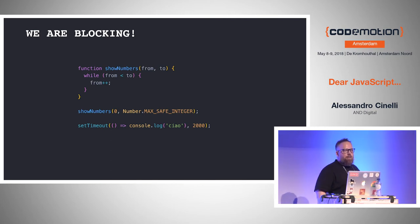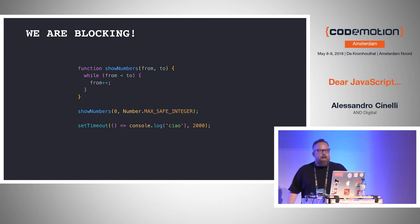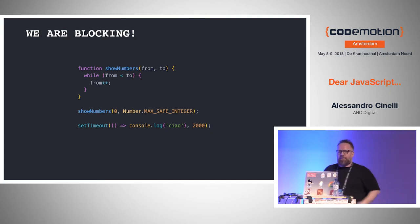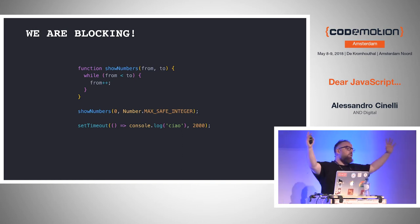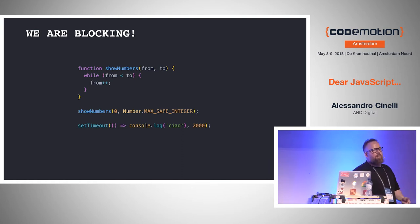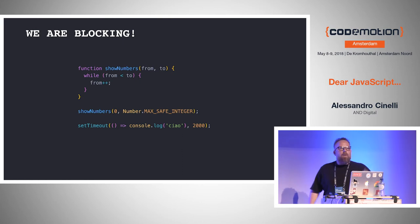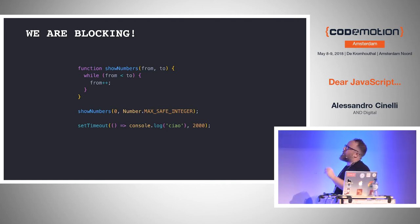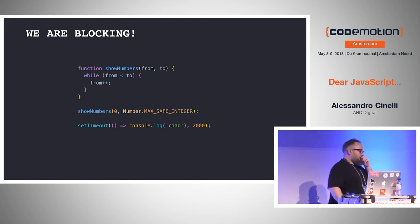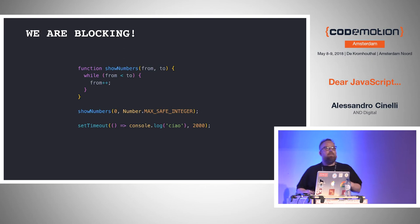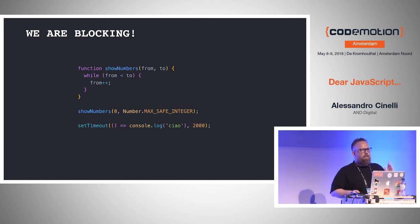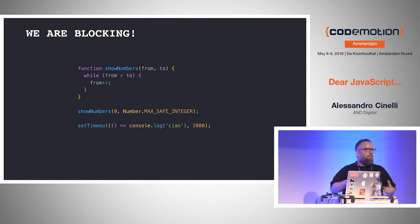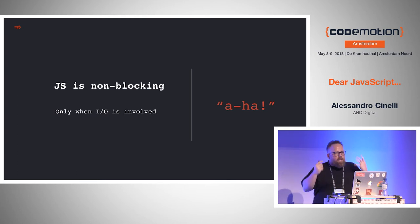Let's check this snippet of code. Let's say we have a function that shows numbers — you pass a starting number and an ending number, and you have a while loop incrementing from. If you call this function with zero and Number.MAX_SAFE_INTEGER — a huge number — and then you have a setTimeout that will print 'ciao' to the console after two seconds, it depends on your machine, but on my MacBook Pro it took 30 minutes before I could see 'ciao' in the console. So you are blocking. If it's something not related to I/O — network calls, file system, events — you are blocking. JavaScript is doing one thing at a time, and this is just CPU-bound, not I/O.